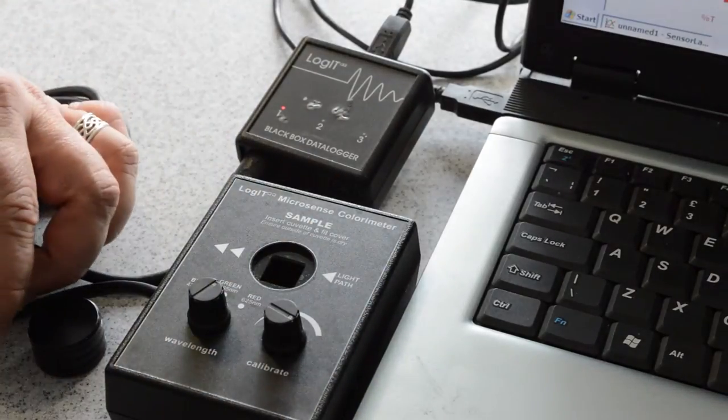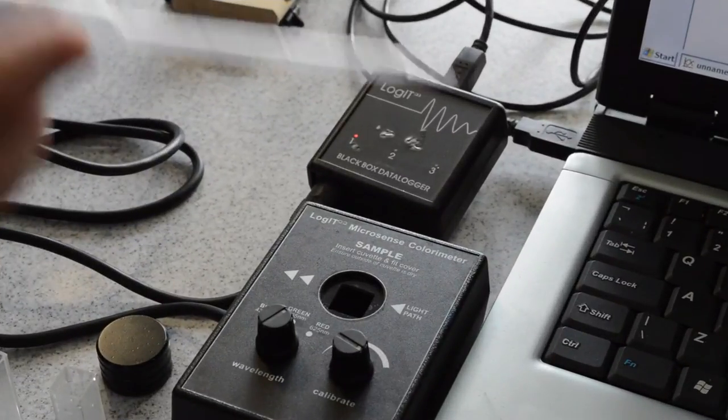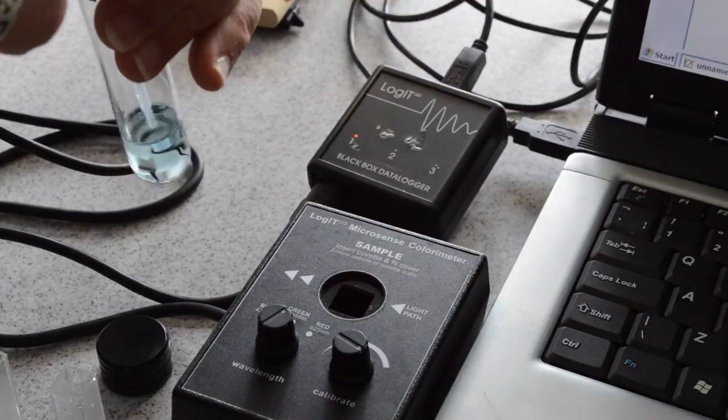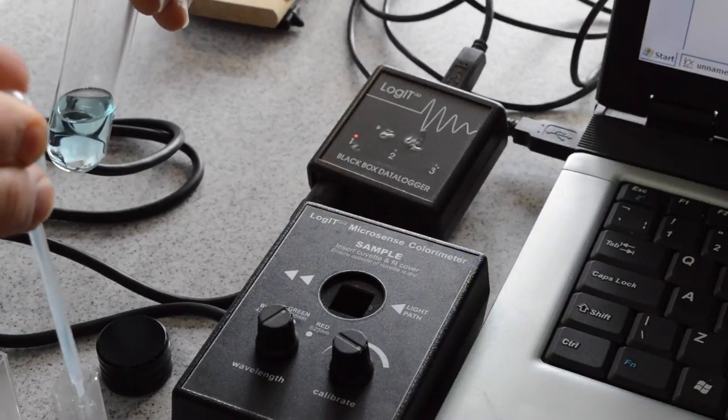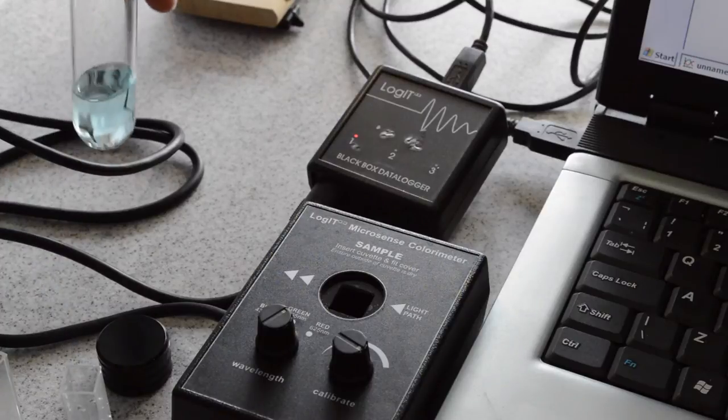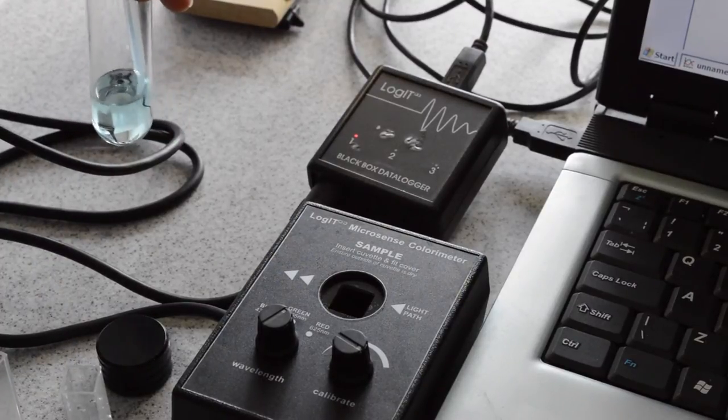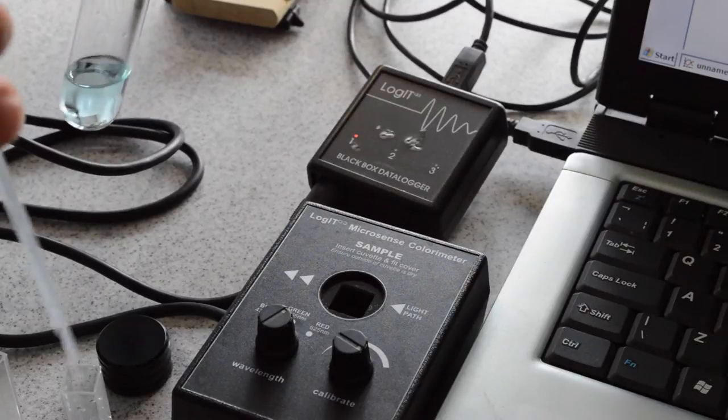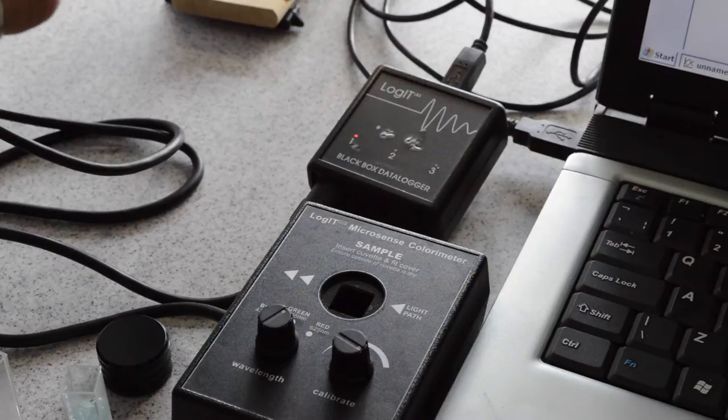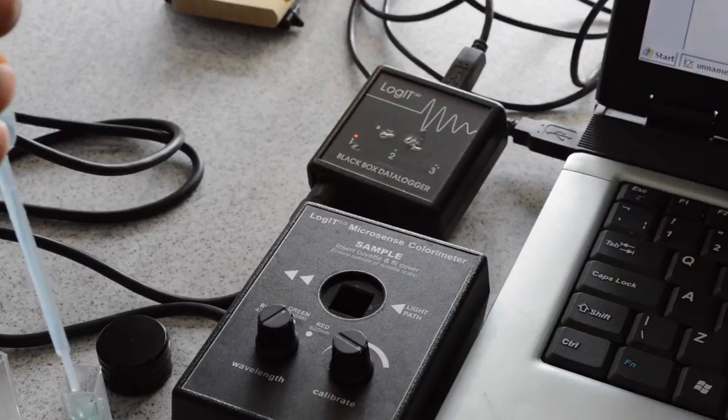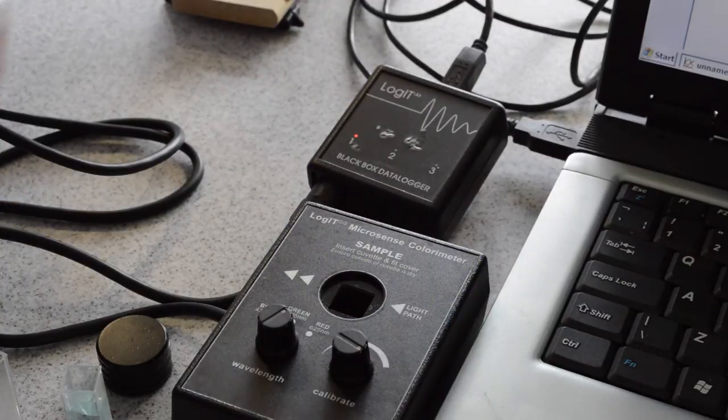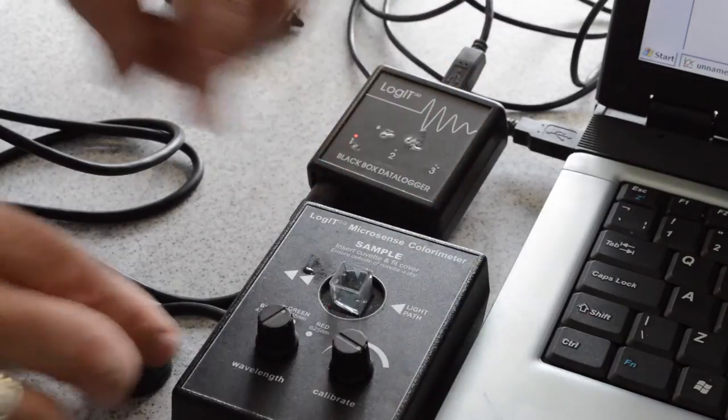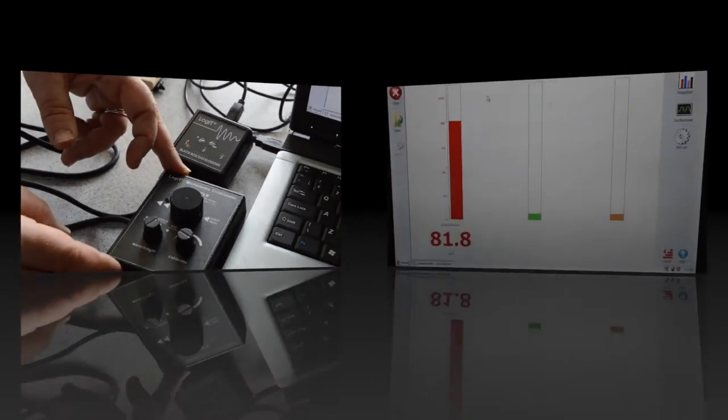When the colorimeter has been calibrated, remove the sample of distilled water. Then using a pipette, fill a cuvette from the sample tube labeled number nine. There is no need to recalibrate the colorimeter to introduce this sample, as the colorimeter has already been calibrated for clear distilled water. Place in the sample from tube number nine and note the value on the colorimeter on the computer screen.